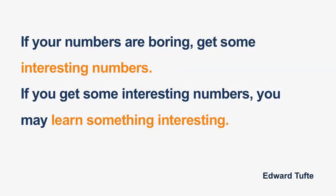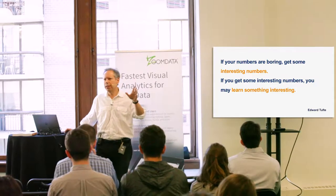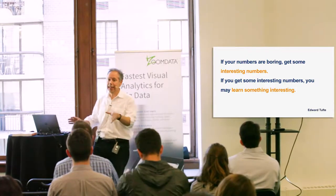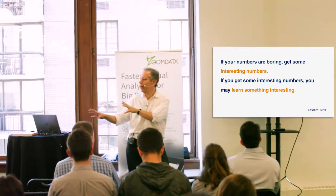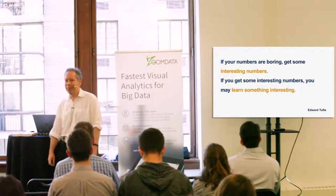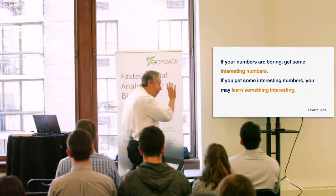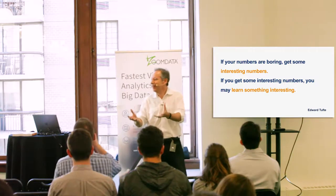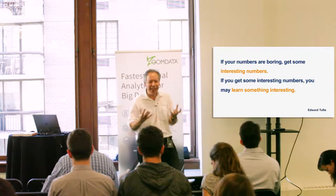The quote is: 'If your numbers are boring, get some interesting numbers. If you get some interesting numbers, you may learn something interesting.' How many of you have heard of Edward Tufte? He's written the seminal work, The Visual Display of Quantitative Information, 1983. The reason I had trouble finding the exact words is I knew it was on a tweet, and when I went to find the tweet, he has banned me from following him on Twitter. And apparently he's banned a bunch of people — this is like the Donald Trump of data visualization.